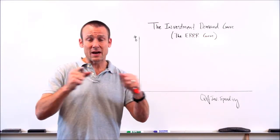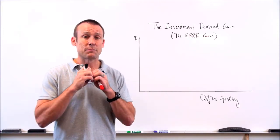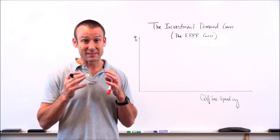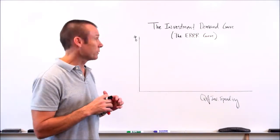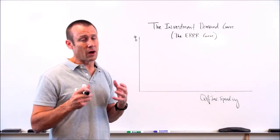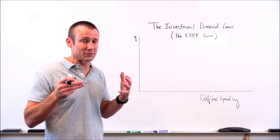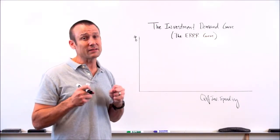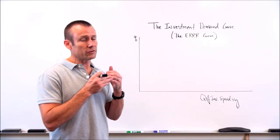If we looked across the entire economy at all the business projects being considered, we would see millions of projects. And since we have millions of projects, when we try to build our investment demand curve, we would have millions of dots on this curve. What do millions of dots look like on a curve like this? They look like a line.